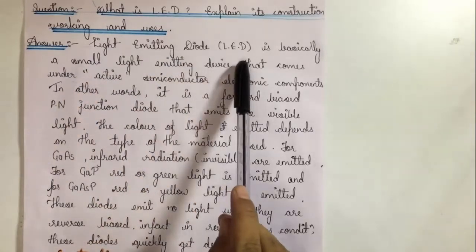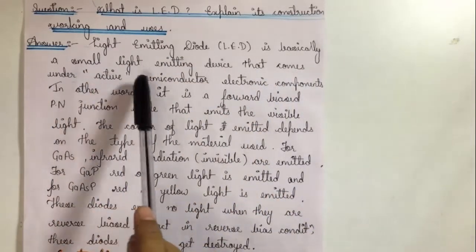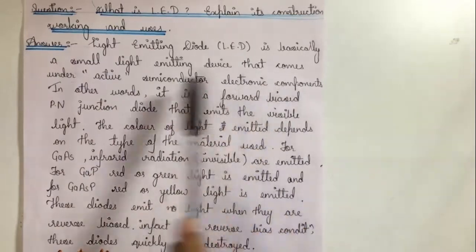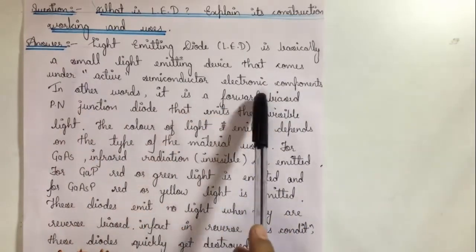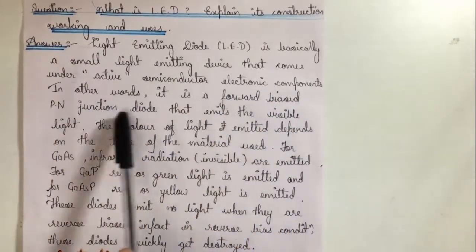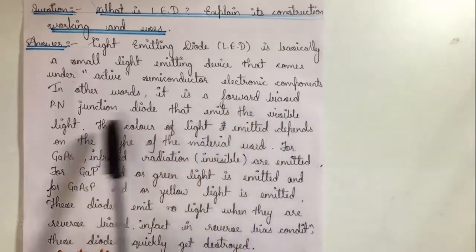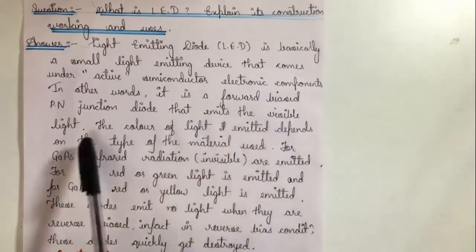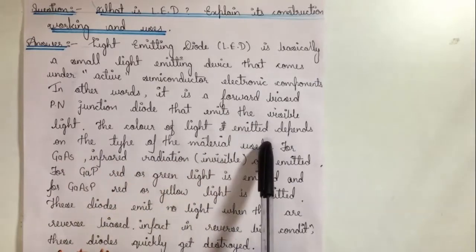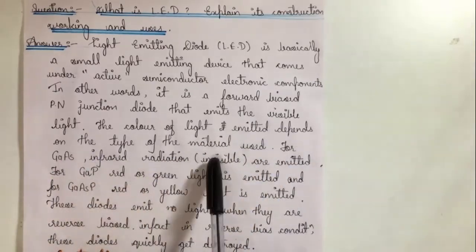Light Emitting Diode (LED) is basically a small light emitting device that comes under active semiconductor electronic components. In other words, it is a forward biased PN junction diode that emits visible light. The color of the light emitted depends on the type of material used.